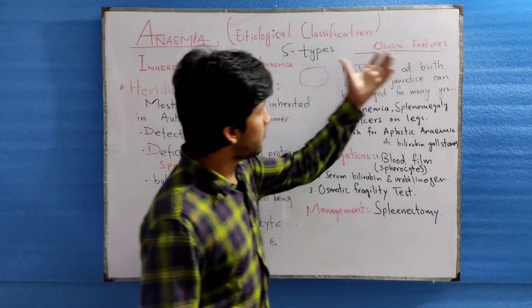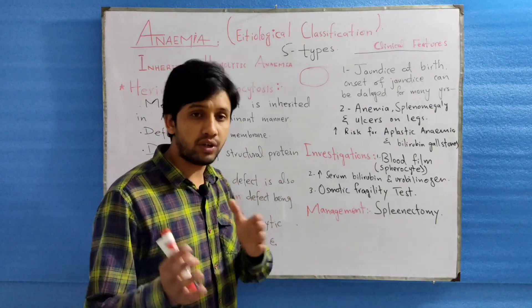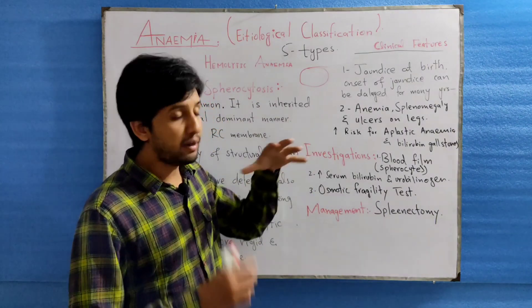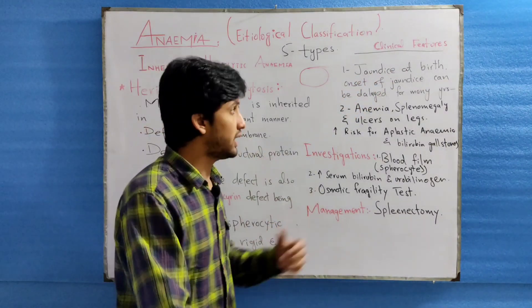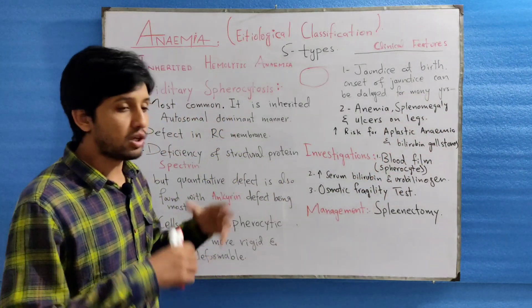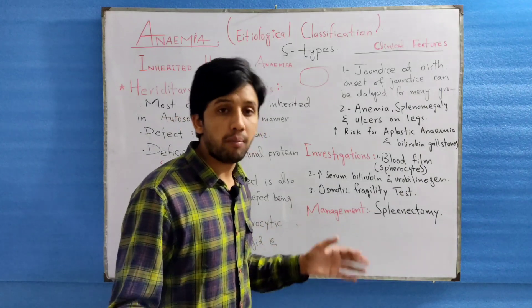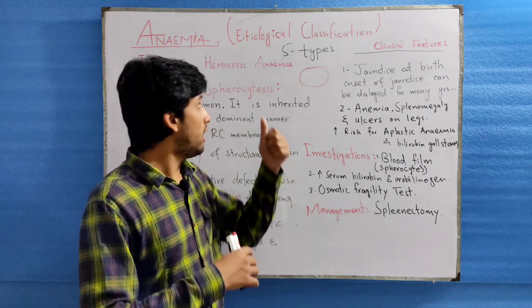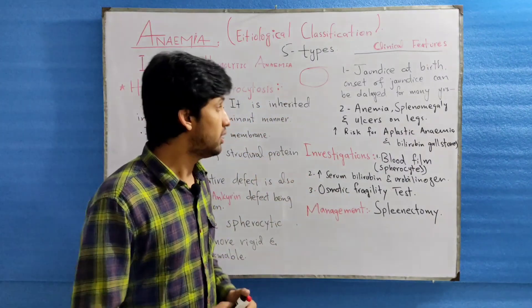Coming to the clinical features of the patient, when the hereditary spherocytic patient comes to you in a clinic, he will present at birth with jaundice, and the onset of jaundice can be delayed for many years. Some patients can go through life without any symptoms, but by studying the family history, hereditary spherocytosis can be detected.